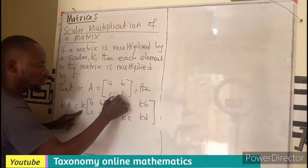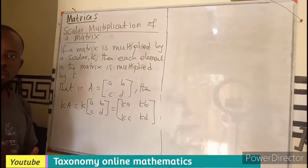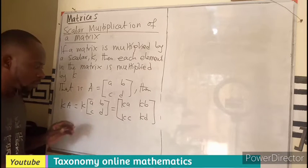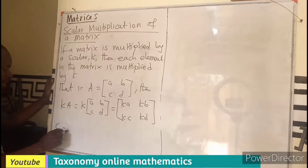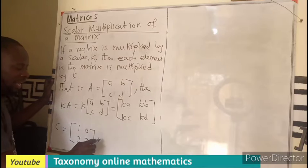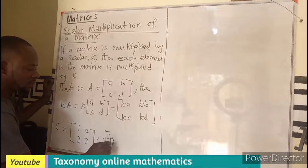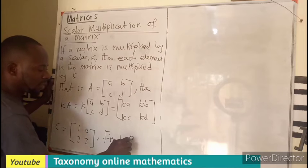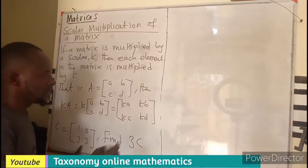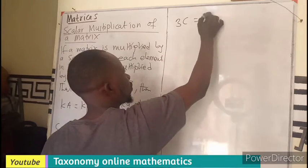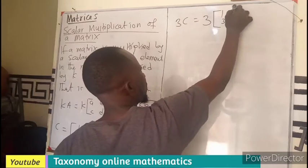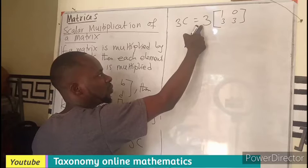So each element in a matrix will be multiplied by that given scalar. If I have matrix C equals [1, 3; 0, 3], and you are asked to find 3C, meaning three multiplying the matrix C, that will be 3C equals three times the matrix.